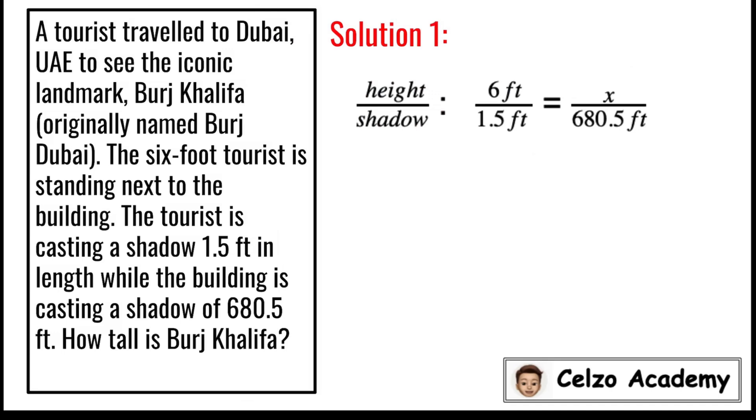By cross multiplication, we multiply 1.5 by x. So we have 1.5x. And we also multiply 6 times 680.5. So the new equation now is 1.5x is equal to 4083.